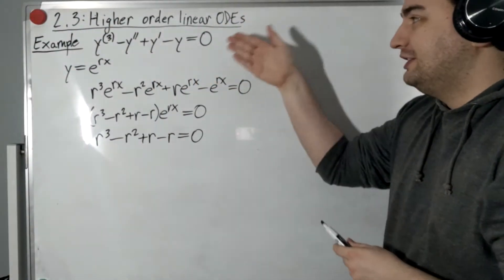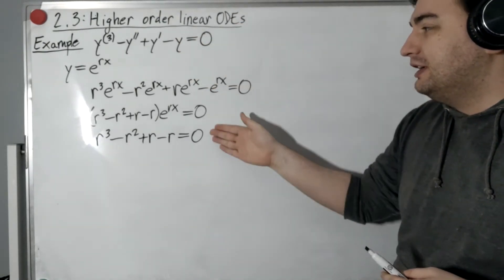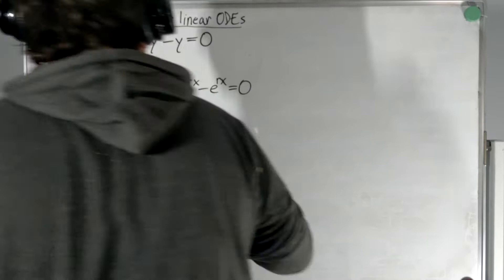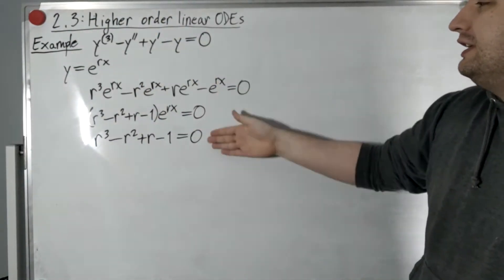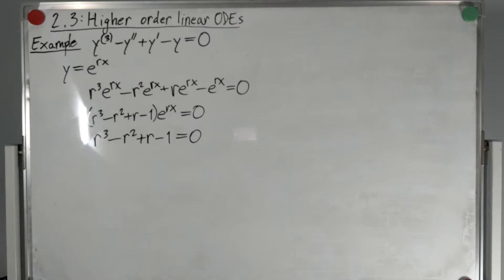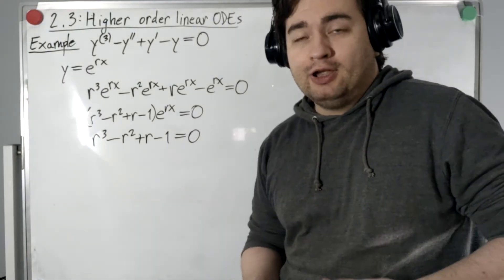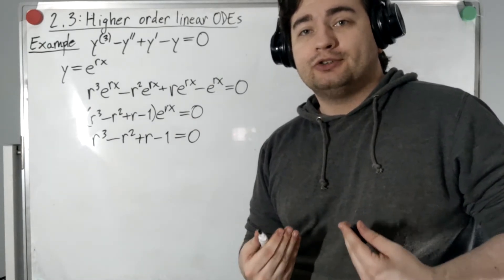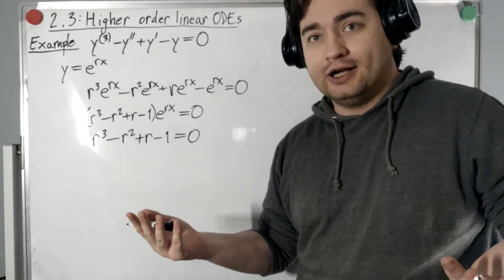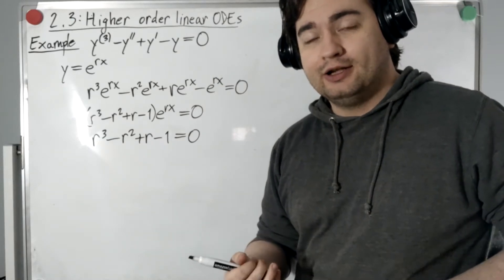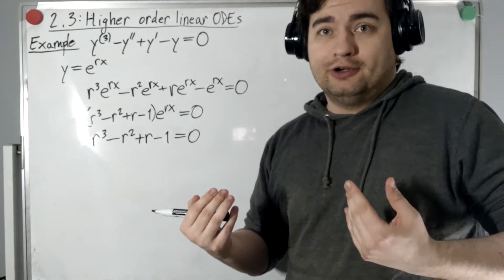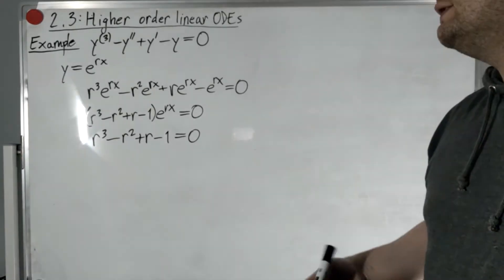You don't need to show all that work — you can go straight to the characteristic equation. Now, just as before, we need to figure out the roots. If they're real and distinct, that gives us enough linearly independent solutions. If they are repeated, we multiply by x. And if they are non-real, we use Euler's formula. Let's see how it works here.